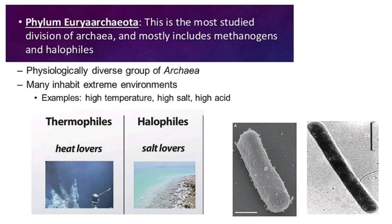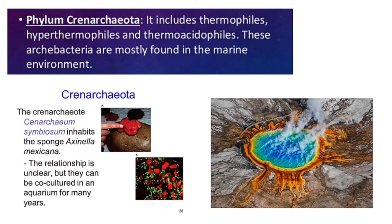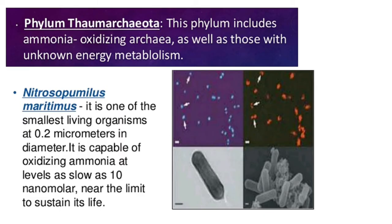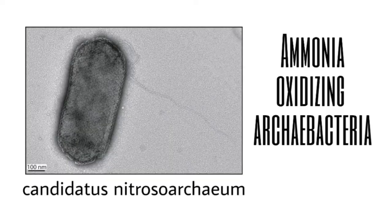Euryarchaeota is the most studied phylum and mostly includes methanogens and halophiles. Crenarchaeota consists of hyperthermophiles and thermoacidophiles found in marine environments. Korarchaeota consists of thermophiles that live in hot springs, volcanoes, and hydrothermal vents. Thaumarchaeota consists of ammonia-oxidizing Archaea as well as those with unknown energy metabolism; one example is Candidatus nitrosoarchaeum.